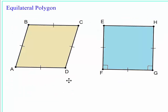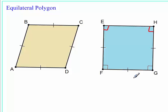An equilateral polygon doesn't necessarily have congruent interior angles. For example, a rhombus has opposing angles that are congruent, but not consecutive angles. A square, however, has every interior angle equal to 90 degrees — 4 minus 2 times 180 is 360, and 360 divided by 4 gives each interior angle as 90.